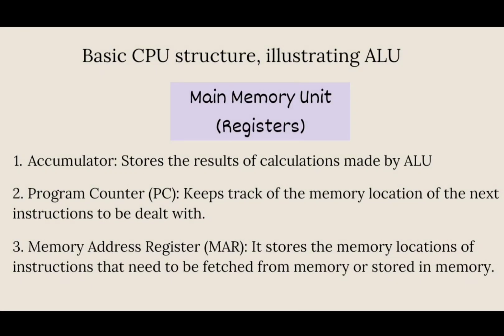In the main memory unit, registers are the smallest data-holding elements built into the processor itself. They are quickly accessible locations available to the CPU, and may hold an instruction, a storage address, or any kind of data. The main registers are: accumulator, program counter, memory address register, memory data register, current instruction register, and instruction buffer register.